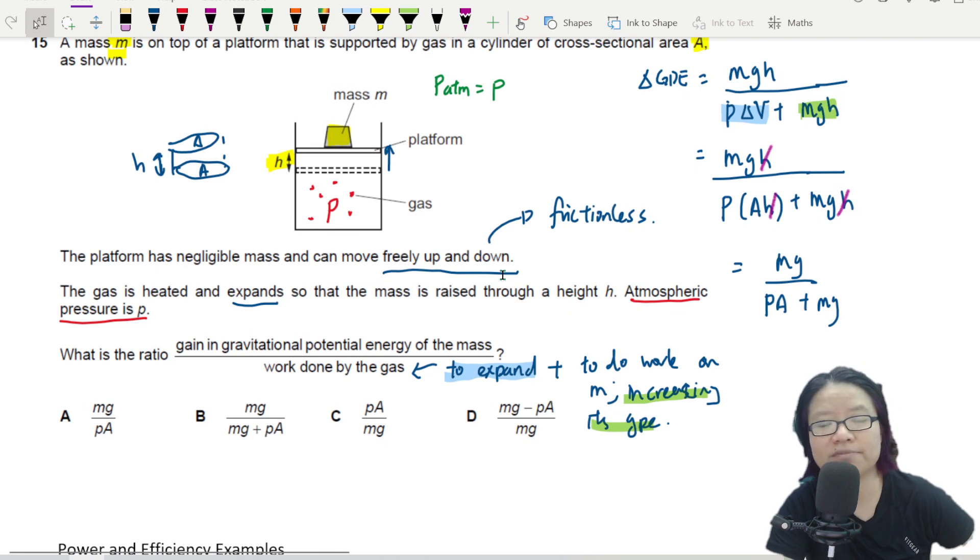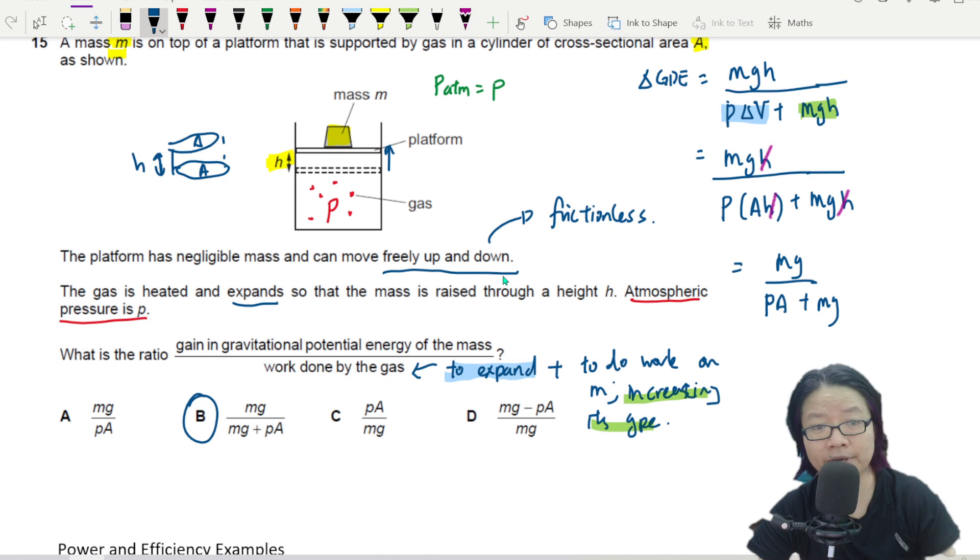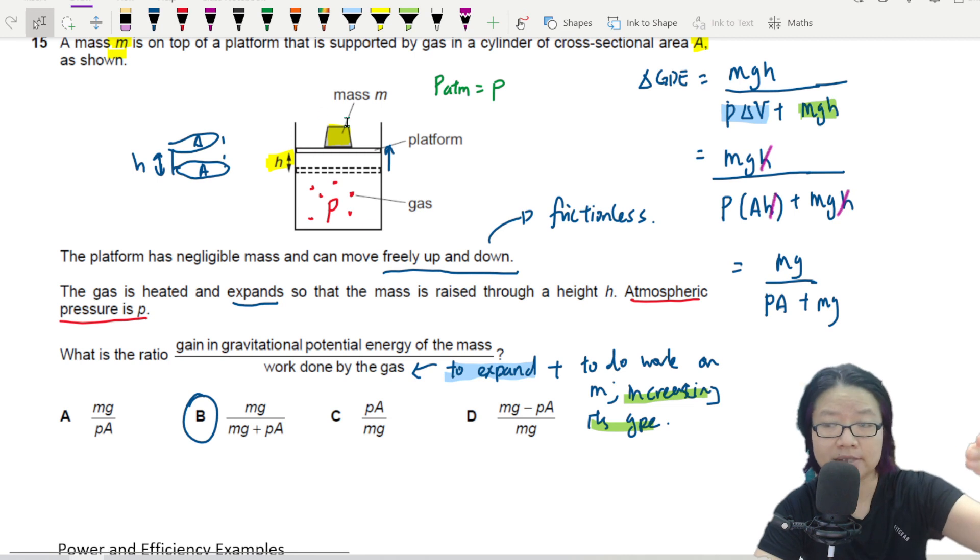And that will give me the answer of B. So don't think that the gas is only doing work to expand. Because without the mass, the gas work done is P delta V. With the mass on top of the platform, the gas need to do two things. Expand and also lift up the weight. That's it for this question. I'll see you in the next example video. Stay curious. Bye-bye.